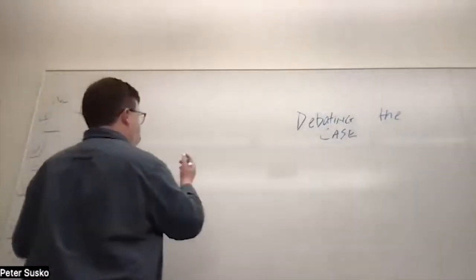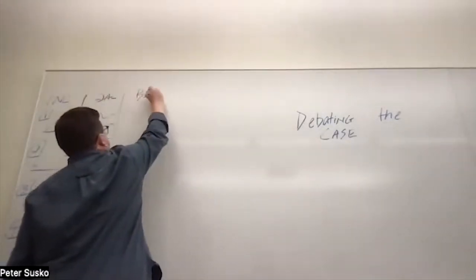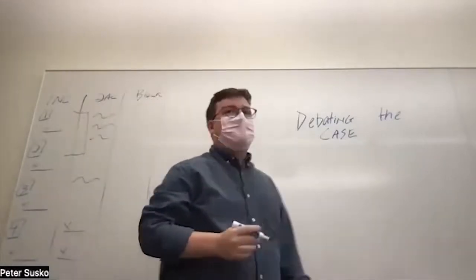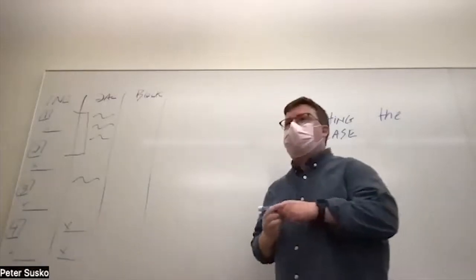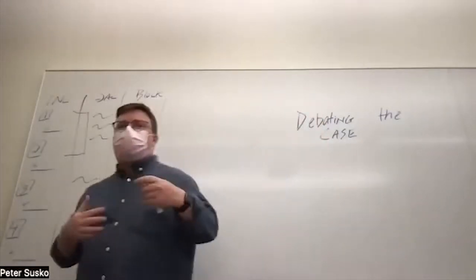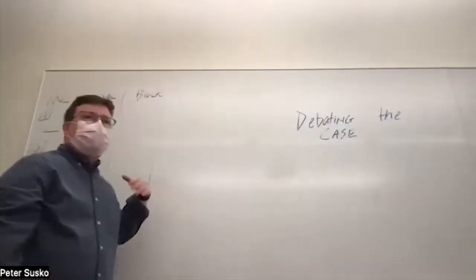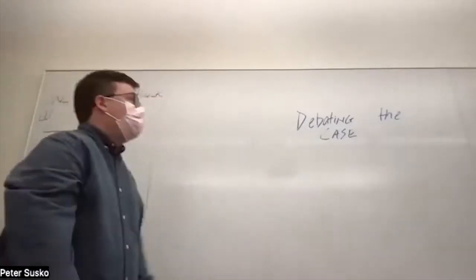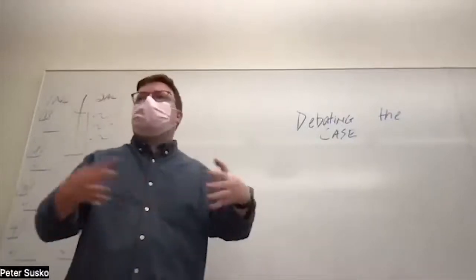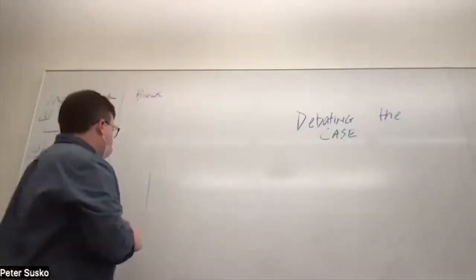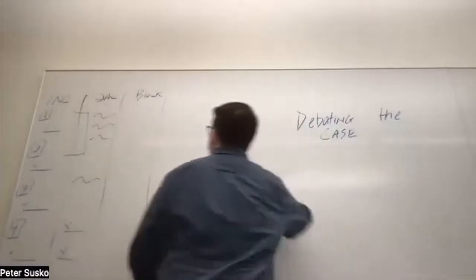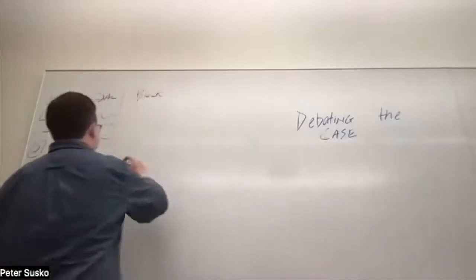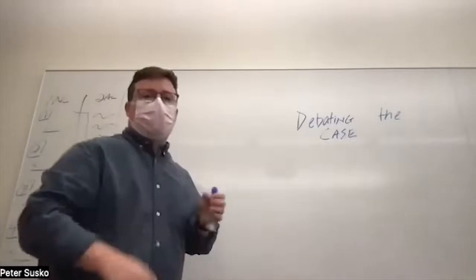I'm going to be putting a block here instead of a 1NR or 2NC. The reason is this structure can be applied for either situation. Some of you might be doing DA and then case in the 2NC, and you give your 1NR topicality — it doesn't matter. So here is going to be our structure. What do we think the first thing to do in a case debate is? What do we think the first thing in a structure of extending a case argument is?